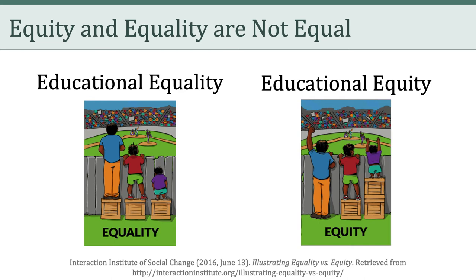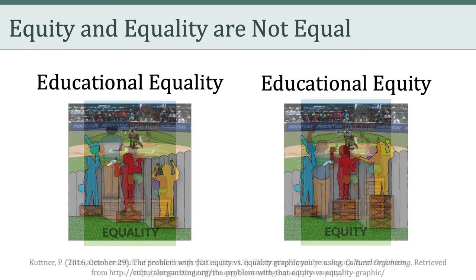There's a problem with the graphic on the right. The problem has to do with where the initial inequity is located. In the graphic, some people need more support to see over the fence because they are shorter — suggesting an issue inherent to the people themselves. This is fine if we're talking about height, but this is supposed to be a metaphor for other inequities, and when that happens, it becomes problematic. This is actually a great example of what has been called deficit thinking — an ideology that blames victims of oppression for their own situation. As many have argued, it should actually be termed the opportunity gap, because the problem is not the abilities of students, but the disparate opportunities they are afforded.